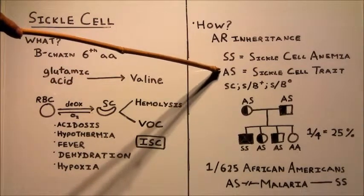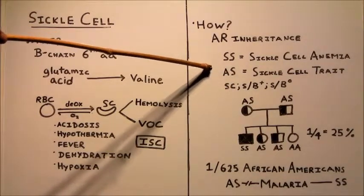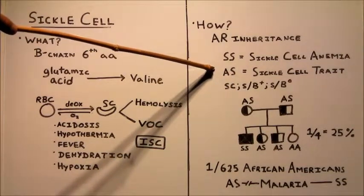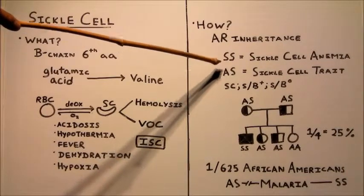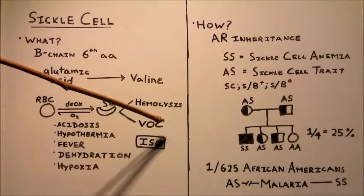Here we have one normal allele and one mutated allele. So this is called sickle cell trait. So people with sickle cell trait still have sickled cells, but they usually don't have the symptoms that are seen in sickle cell anemia. So no hemolysis and no vaso-occlusive crises.